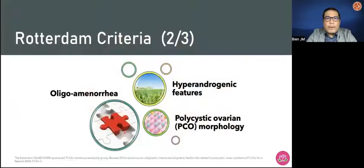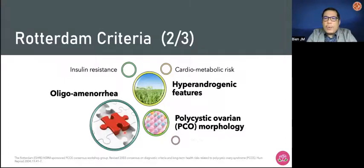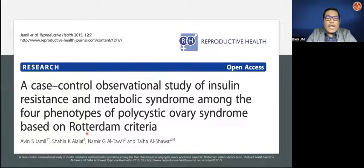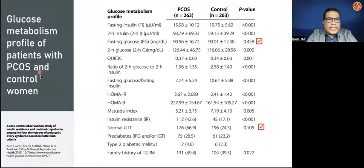Though in the Rotterdam criteria you just need two of the three features to diagnose PCOS, we see that patients with PCOS have concomitant insulin resistance and concomitant cardiometabolic risk as well as obesity. In a case-controlled observation study of insulin resistance among patients with PCOS looking at the four Rotterdam phenotypes, they looked at glucose metabolism profile of those patients versus control women. Fasting glucose as well as GTT may not be a good enough test to establish insulin resistance in patients with PCOS.